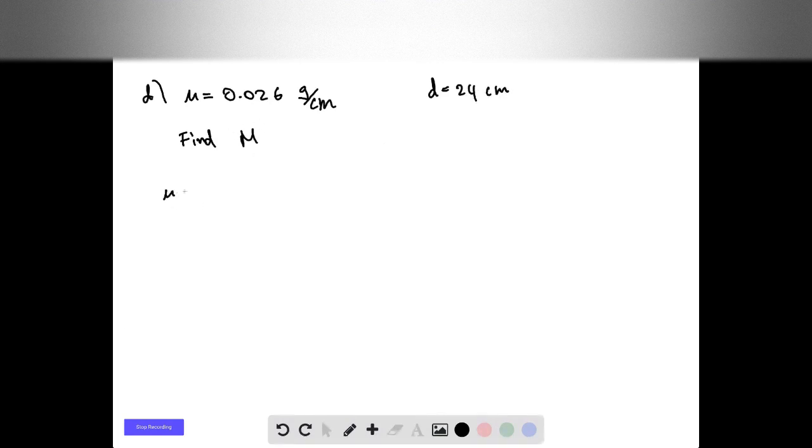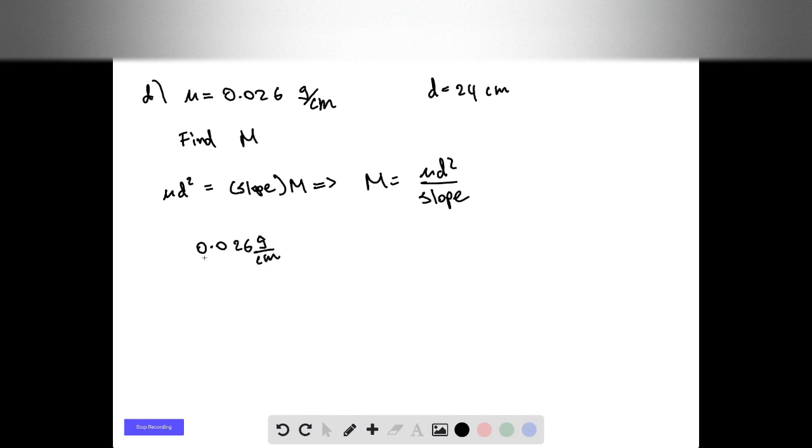This is easy. We know that μd² is equal to our slope times m. Therefore, m is going to be μd² divided by our slope. We've done this here. That's simply going to be 0.026 grams per centimeter times 24 centimeters squared.